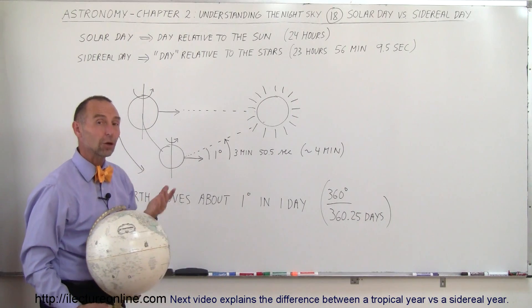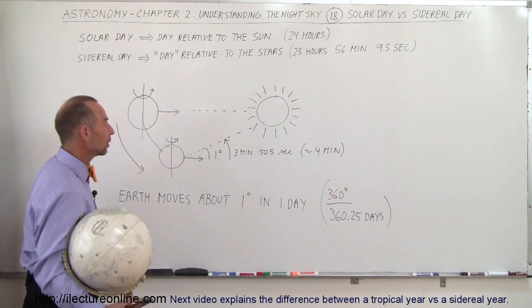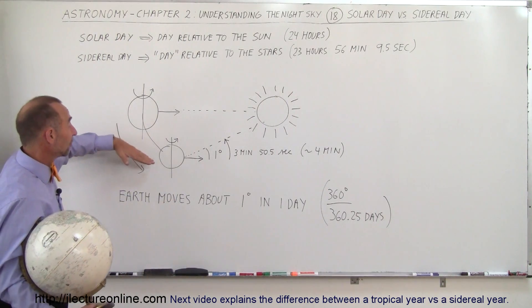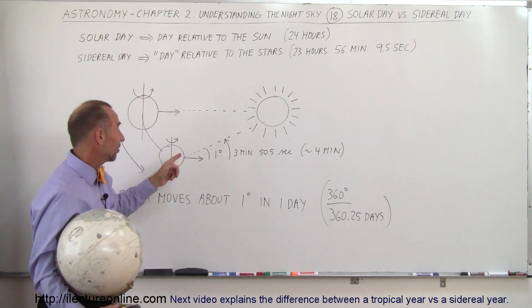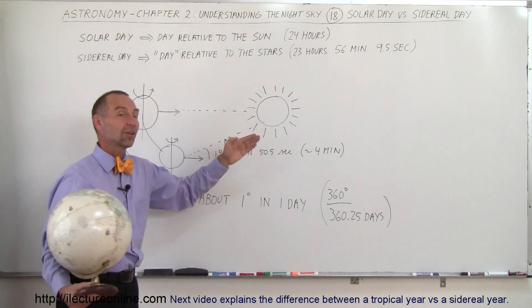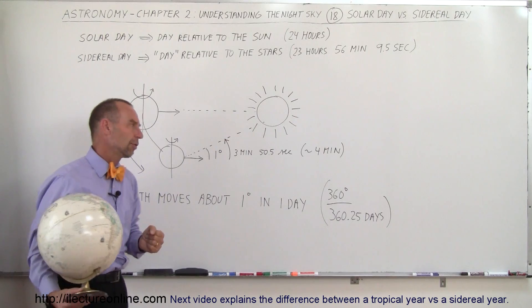And that is the difference between a solar day and a sidereal day. So a solar day means you have to turn enough until the same spot on the Earth is pointed directly at the Sun again after exactly 24 hours.